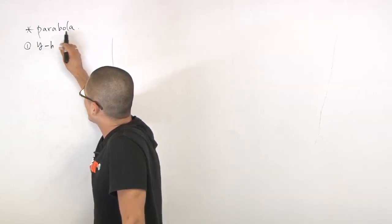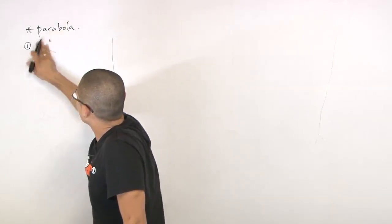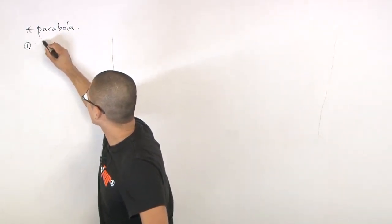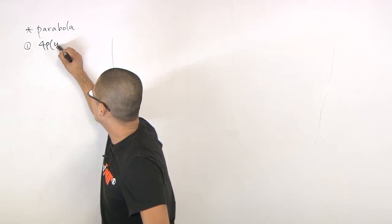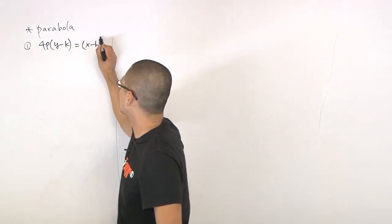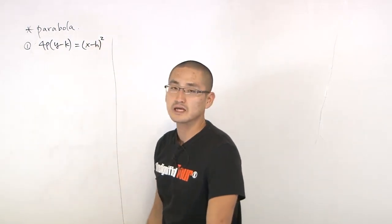y minus k. I always get mixed up with this. So let me take a look. Okay, so 4P times y minus k is equal to x minus h squared. So this one is the one that has x squared.